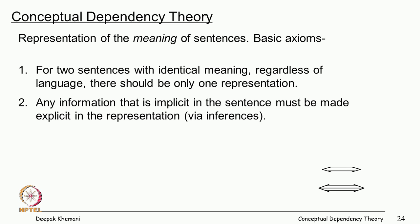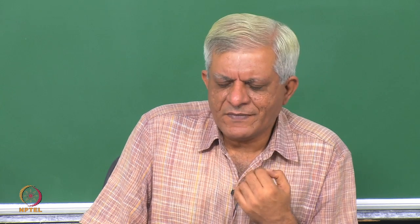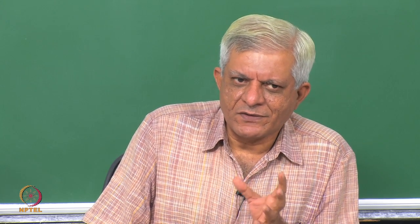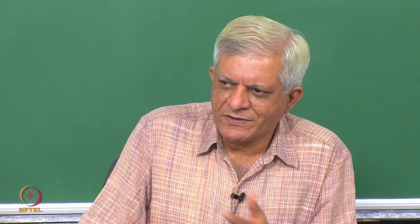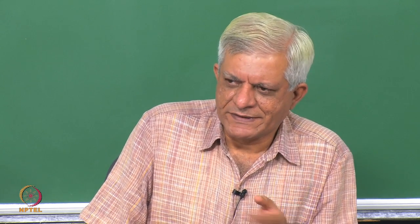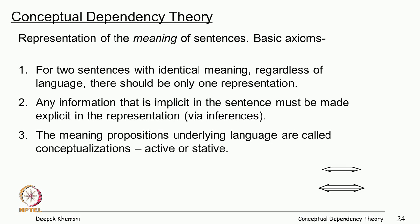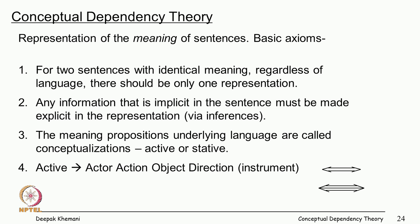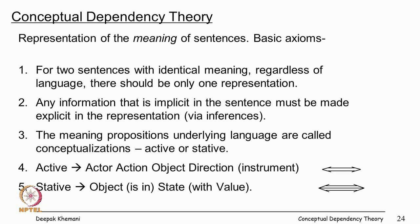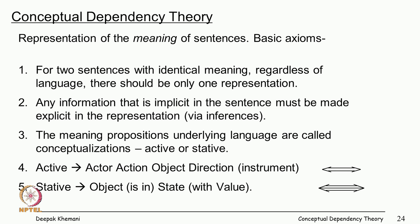Any information implicit in the sentence must be made explicit in the representation, because the representation is all you will be working with. In some sense it is like eager evaluation: the moment you can figure out what the sentence is saying, you create its representation, as opposed to lazy evaluation where you make inferences only when needed. The meaning propositions underlying language are called conceptualizations — two kinds: active and stative. Active says an actor does an action with an object, direction, and possible instrument; stative says an object is in a state.